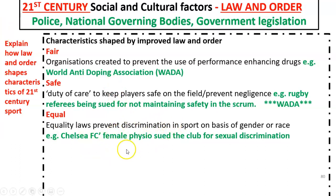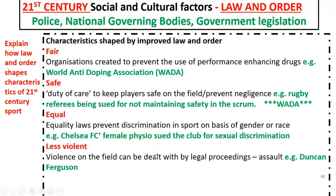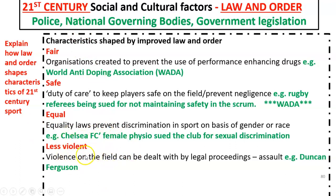Sport is also now less violent. Law and order can make sport less violent because players who commit a violent act on a sports field can now be punished by the courts. For example, Duncan Ferguson, who played for Everton Football Club, headbutted someone on the football pitch, put him in hospital, and was then sent to prison. The police pressed charges for a violent incident on the pitch. People know that if they go over the top, they can be imprisoned as a result.